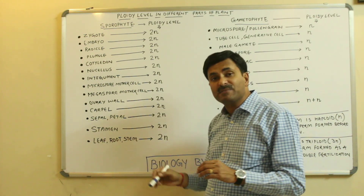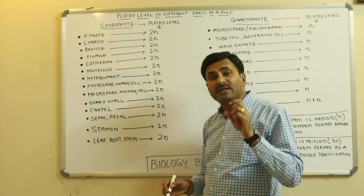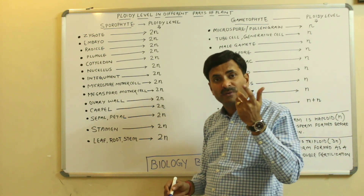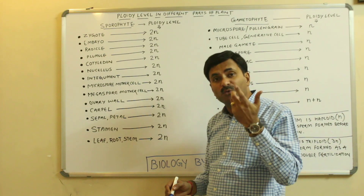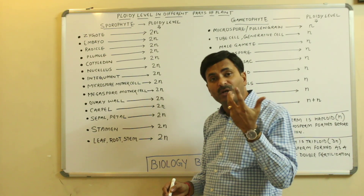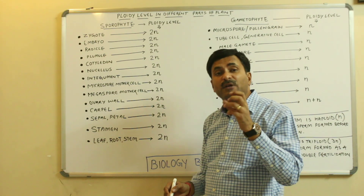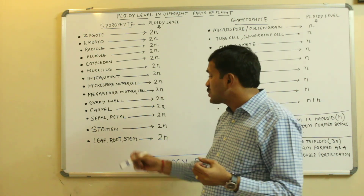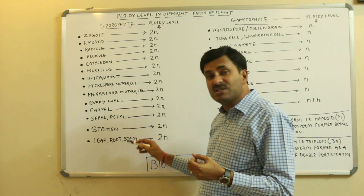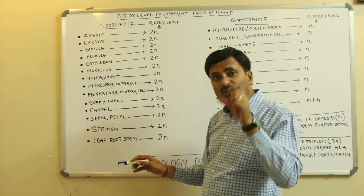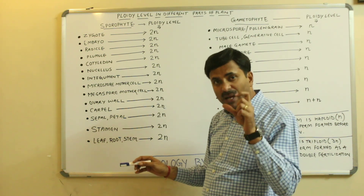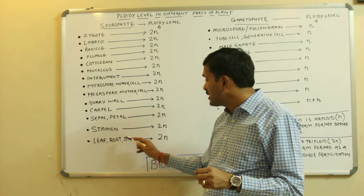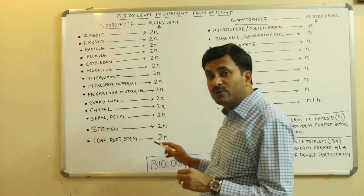Many times the question is asked: if the ploidy level of the leaf is so and so, or the ploidy level of the root or stem is given, what will be the ploidy level of those parts? You must remember that leaf, root, and stem are the vegetative parts of the diploid plant, so leaf, root, and stem all have the ploidy level of 2N.